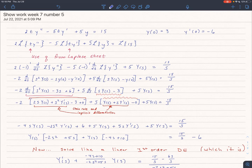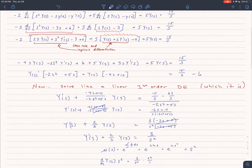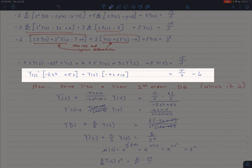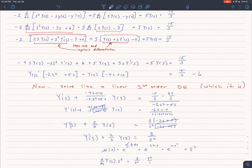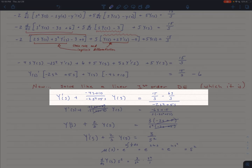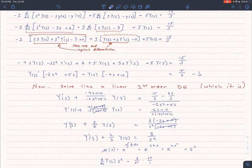So once we have that, and we rearrange our terms, and we group our y prime together and our y together, then we can look at this. And even though this is in terms of s, this is just a first order linear differential equation. So we'll put it in standard form by dividing both sides by whatever the multiple is in front of the y s prime.